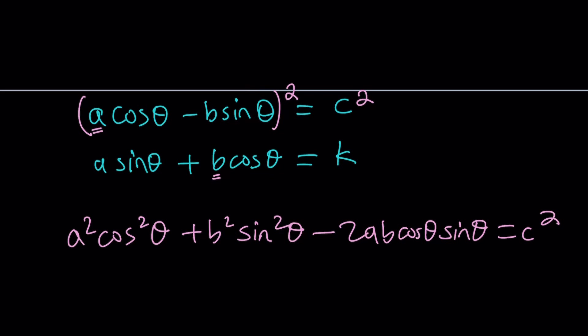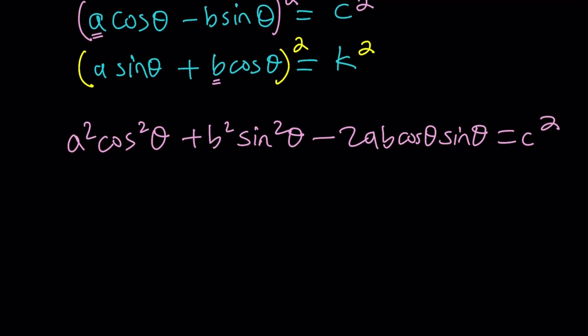And now we're going to do the second one, same way. And now this is going to give us a squared sine squared theta plus b squared cosine squared theta. Notice that the coefficients are aligned nicely. And then plus 2ab sine theta cosine theta equals k squared.